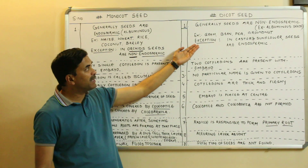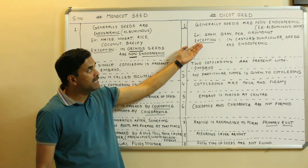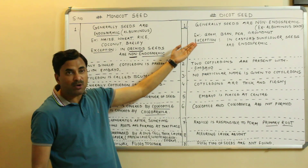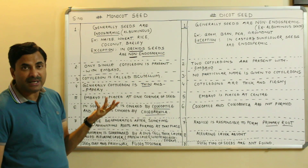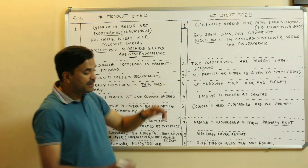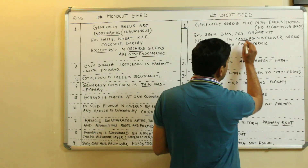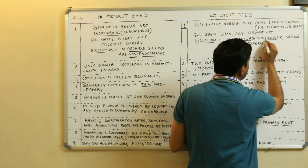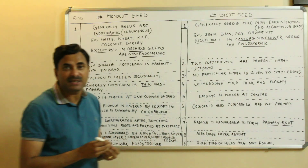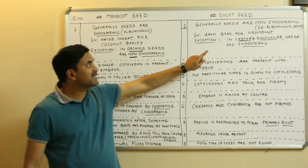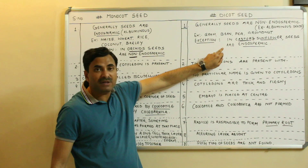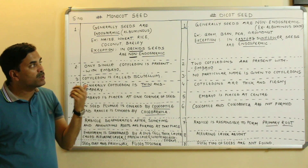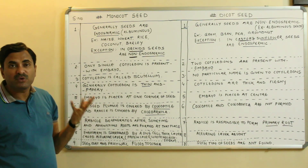Examples of dicot seeds include gram, bean, pea, and groundnut. But there are exceptions here too: in castor and sunflower, the dicot seeds are endospermic instead of non-endospermic. So in dicot seeds, castor and sunflower are the two exceptions where seeds are endospermic.